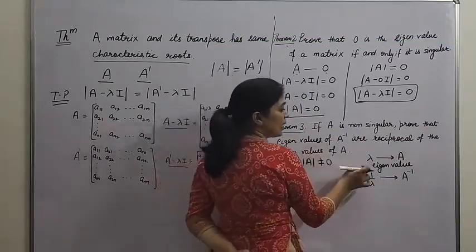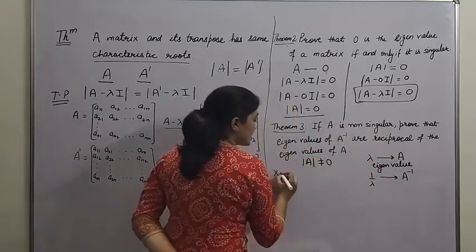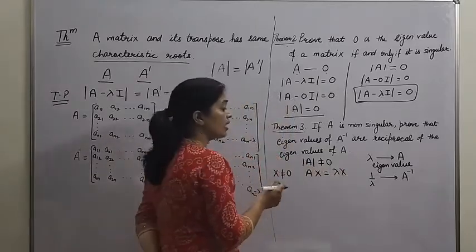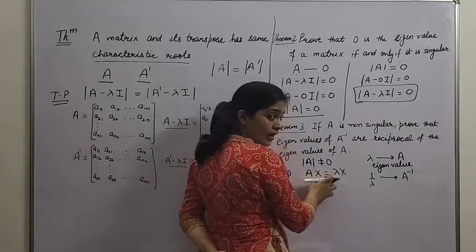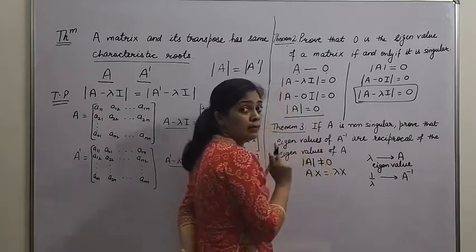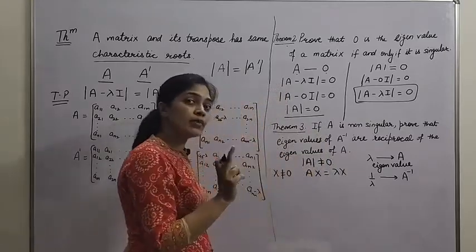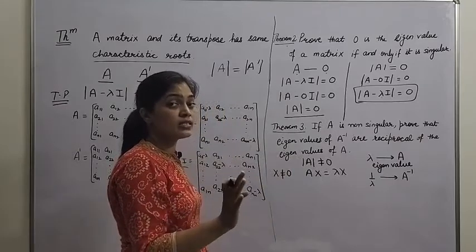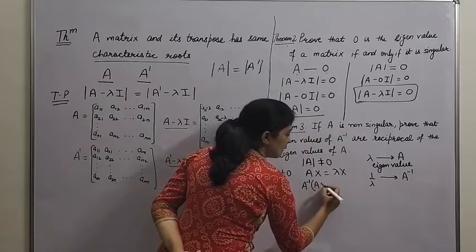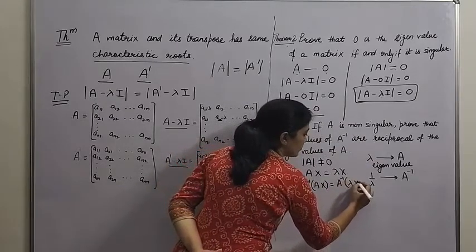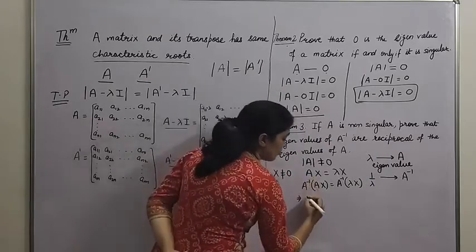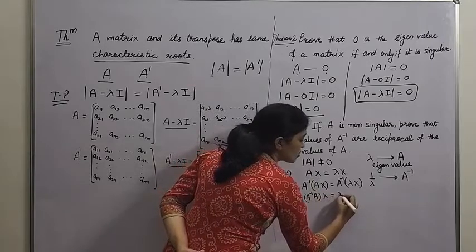How will we prove this? If lambda is an eigenvalue of A, it means there exists a non-zero vector X such that AX = λX. These results we did in the last lectures: if lambda is an eigenvalue, then there exists a corresponding non-zero eigenvector X such that AX = λX. Now since A is non-singular, its inverse exists because non-singular matrices have an inverse. So we multiply the entire equation from the left by A inverse, and using the associative property of matrices we can write: A inverse · A · X = λ · A inverse · X.